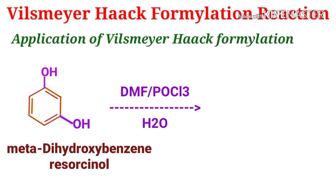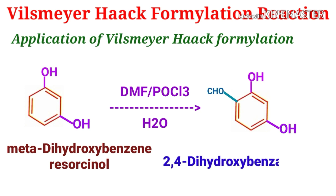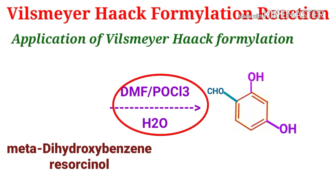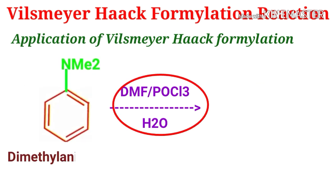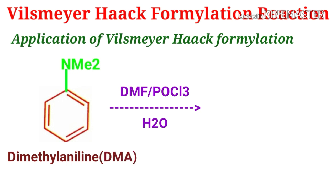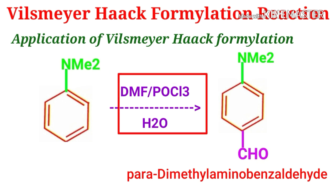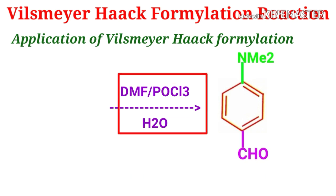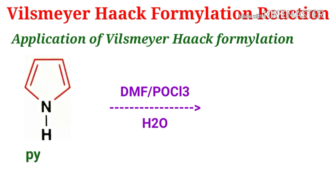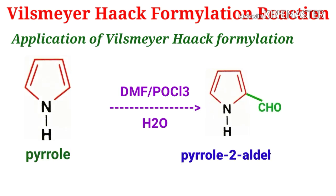Resorcinol gives 2,4-dihydroxybenzaldehyde with the same reagent. Similarly, dimethylaniline (DMA) also gives p-dimethylaminobenzaldehyde — also an aryl aldehyde — with treatment of the same reagent. Finally, pyrrole also gives pyrrole-2-carbaldehyde with treatment of the same reagent.